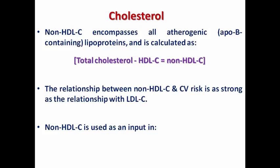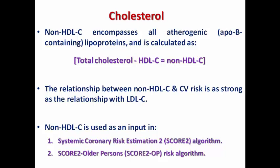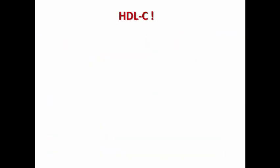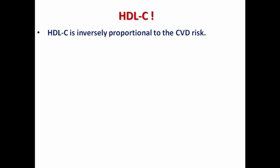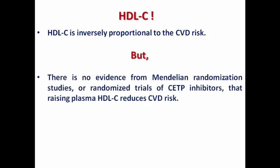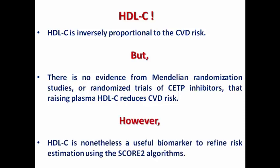Non-HDL cholesterol is used as a marker in the SCORE2 algorithm and the SCORE2 older persons algorithm. Regarding HDL cholesterol — we all know that HDL cholesterol is inversely proportional to cardiovascular disease risk, and in the general population its generic terminology is 'beneficial cholesterol.' However, there is no evidence so far from Mendelian randomization studies or randomized trials using CETP inhibitors — such as dalcetrapib or anacetrapib — that raising plasma HDL reduces cardiovascular risk. HDL is still a useful marker in risk estimation using the SCORE2 algorithm, used in risk stratification but not as a therapeutic target.